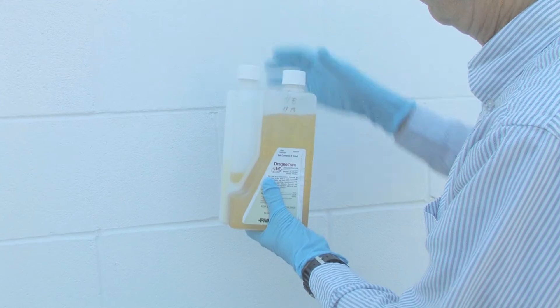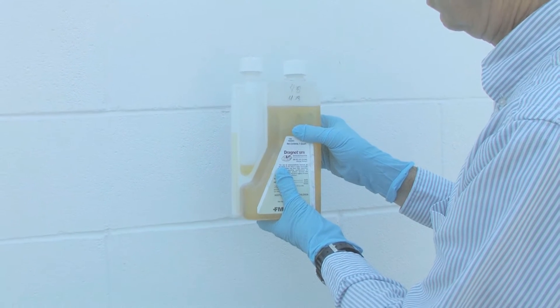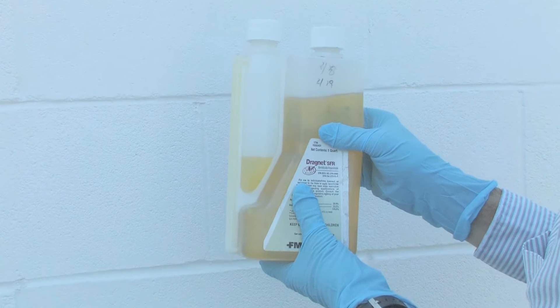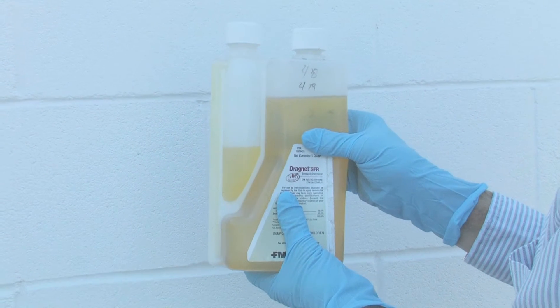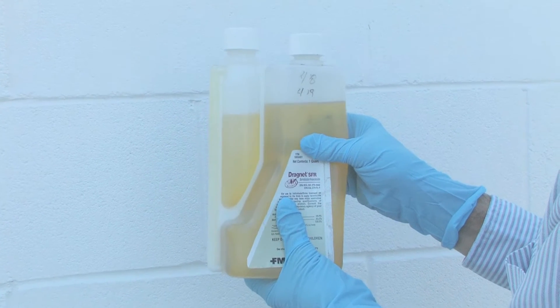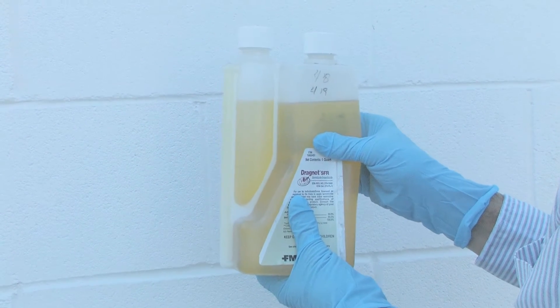The second kind is a squeeze and pour container. In this case, loosen the cap on the side that's going to receive the insecticide, squeeze the container of pesticide to fill up to the correct amount, and then you know exactly the amount of product you're going to put into your sprayer.